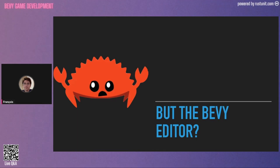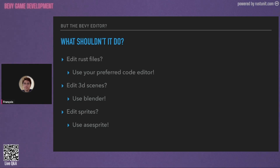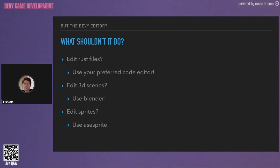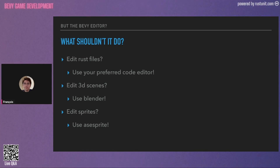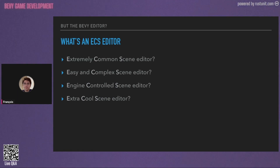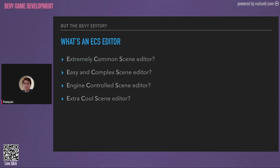But what's remaining for the Bevy editor? Should it edit Rust files? No — keep using your preferred code editor like VS Code or Vim. Edit 3D scenes? Blender is a perfectly fine tool for that. Edit sprites? AseSprite is a very good tool. So what is an ECS editor? I think the interesting part of an ECS editor doesn't have to do anything with the scene at all.